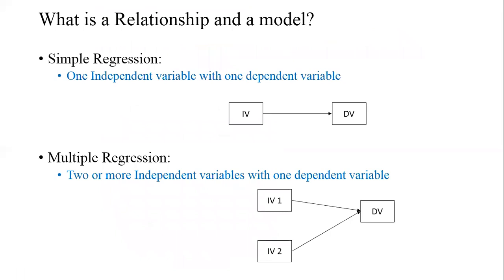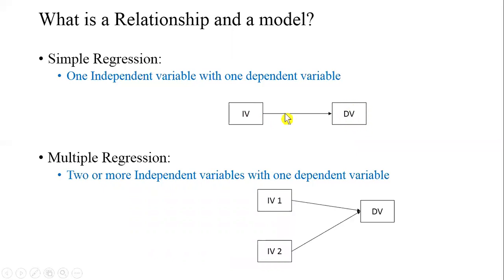Some important things to understand: if we are running a simple regression, this simply means that at one time we are using one independent variable and one dependent variable. So we are trying to measure a relationship of one independent variable with one dependent variable. If we have one independent variable with one dependent variable we call it simple regression.